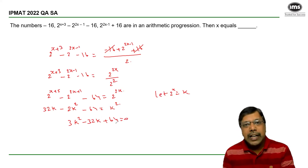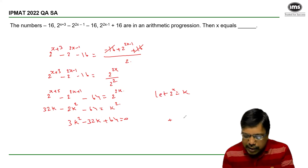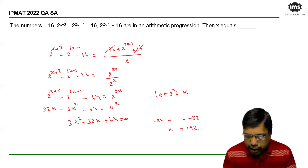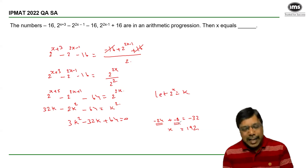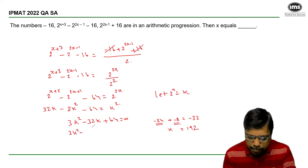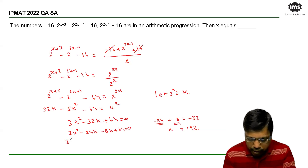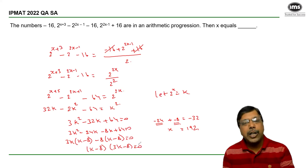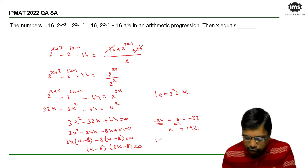So, 3 times 64 is 192. I am looking for two numbers the sum of which is minus 32 and the product of which is 192. By a little bit of trial and error, the required values are minus 24 and minus 8. So, I write this as 3k² minus 24k minus 8k plus 64 equals 0, giving 3k(k minus 8) minus 8(k minus 8) equals 0, which gives us k equals 8 or k equals 8/3.